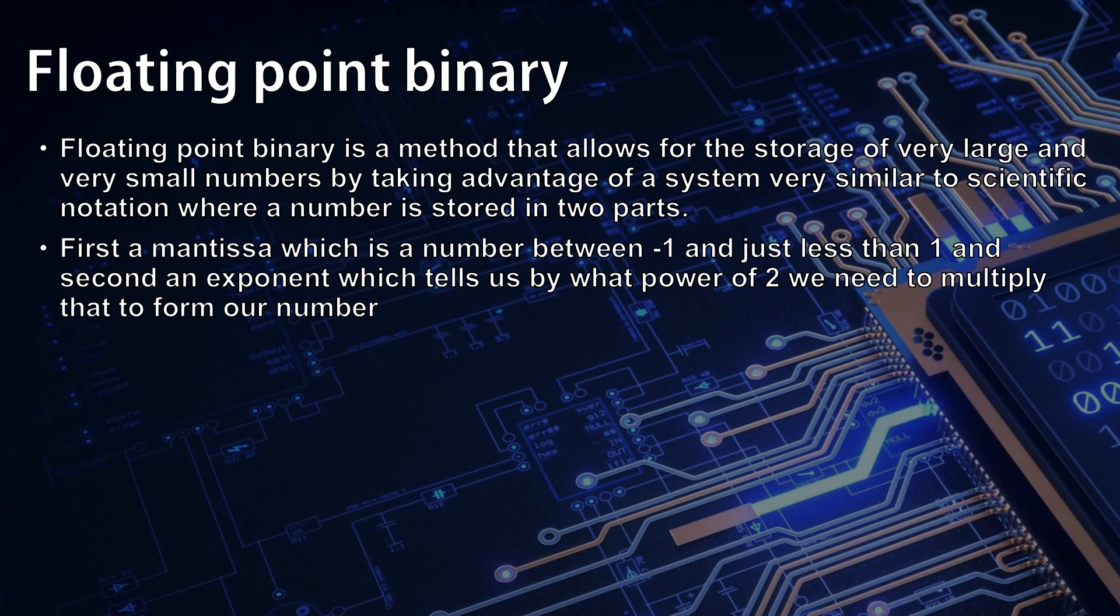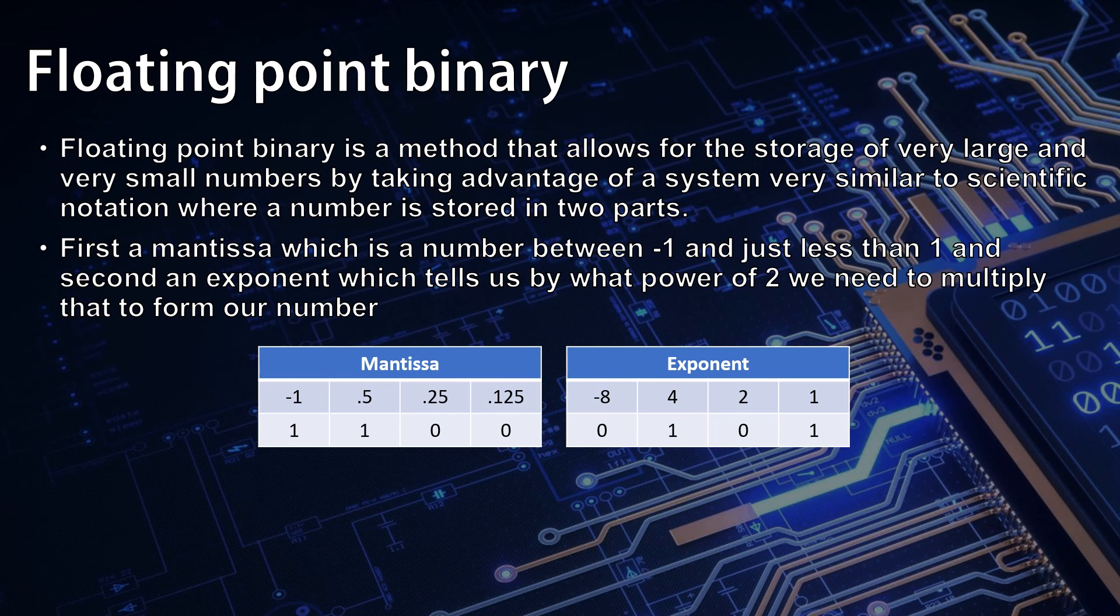If we look at this example here, the number 11000010 if it is a floating point binary number stored so that four bits are used for the mantissa and four bits for the exponent would actually be minus sixteen. The mantissa would work out to be minus one plus a half is minus a half, and the exponent would be five. So we will get minus point five times two to the power of five and that equals minus sixteen.